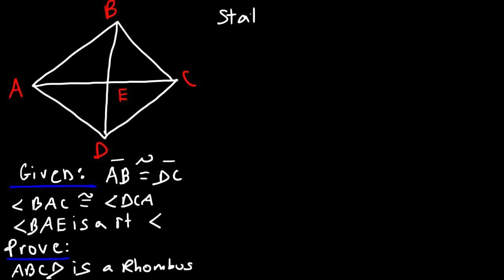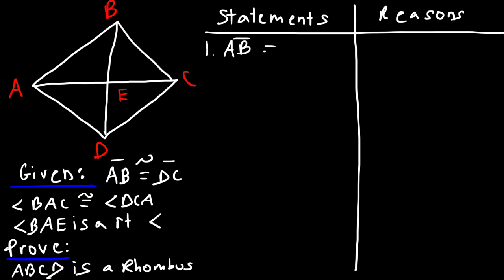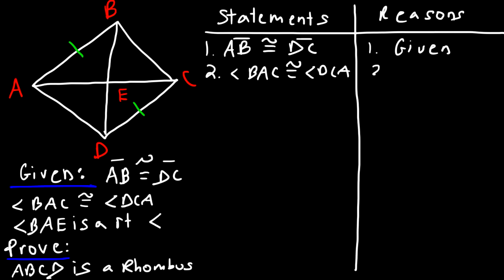Let's start with a two-column proof. Our first given statement is that AB is congruent to DC. The second given statement is that angle BAC is congruent to angle DCA — we can mark those angles on the figure. So this angle BAC is congruent to angle DCA.